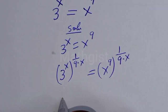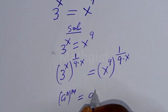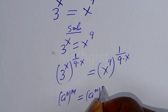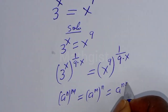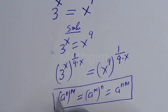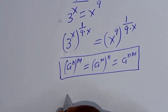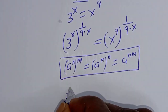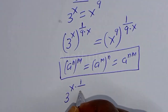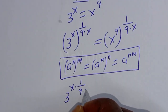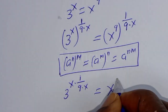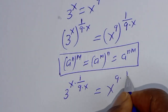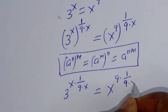Now if you have a raised to power n to the power of m, this is equal to a raised to power m to the power of n, which equals a raised to power nm. So this can be written as 3 raised to power s multiplied by 1 over 9 multiplied by x, equal to s raised to power 9 multiplied by 1 over 9 multiplied by x.